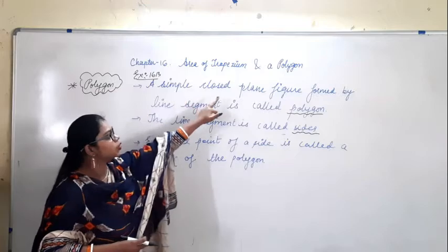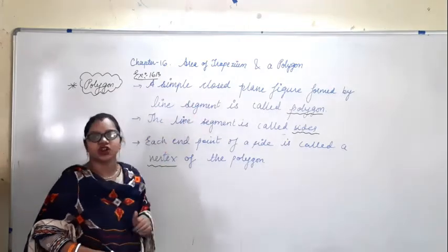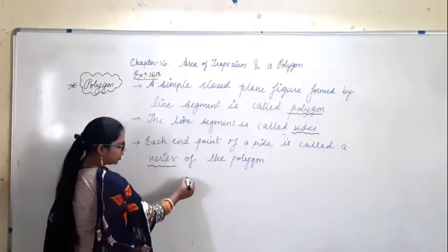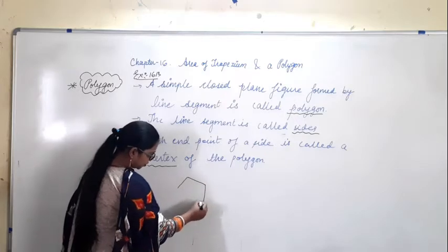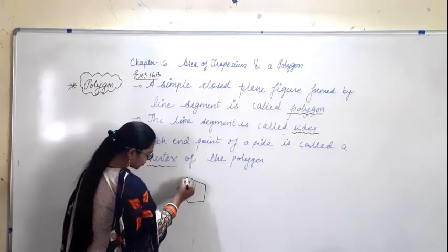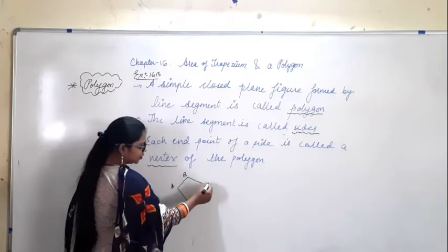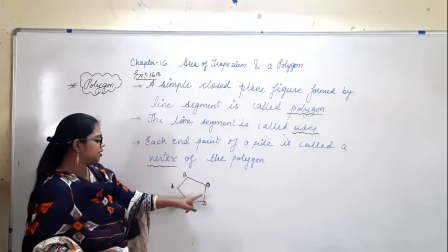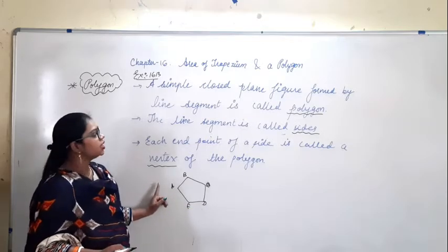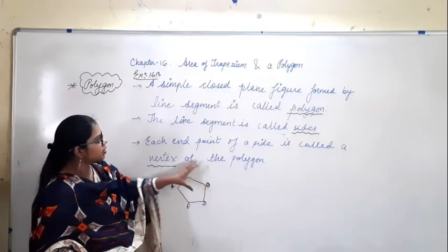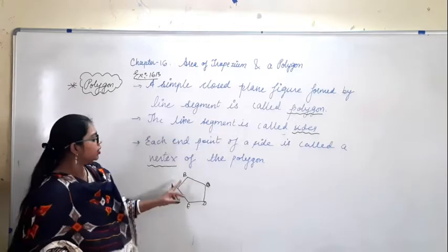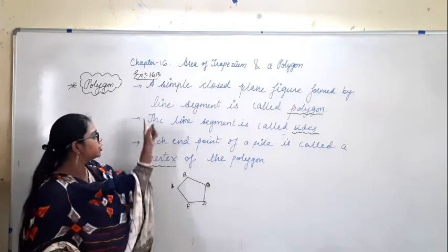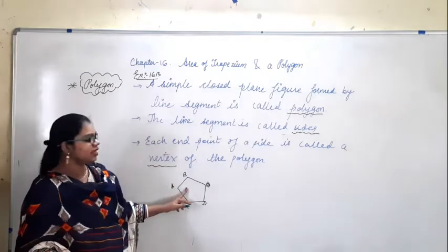First point: a simple closed plane figure formed by line segments is called a polygon. It is a simple closed figure which is formed by line segments. Suppose I draw like this — so these are line segments: AD, BC, CD, DE, and EA are the line segments, and thus it is forming a polygon. The figure should be closed and it should be formed by line segments.